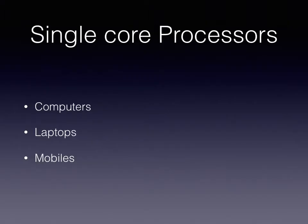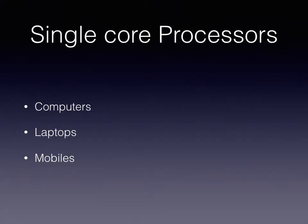Previously, computers came, and after computers there was availability of laptops, and after laptops a lot of people started using mobiles. Previously, all three — computers, laptops, and mobiles — were single core processors. Users of all these kinds of instruments were forced to use a single instruction at a time. That means only a single task could be executed at a time, as with disk operating system machines where you could execute only one job at a time from the command prompt.